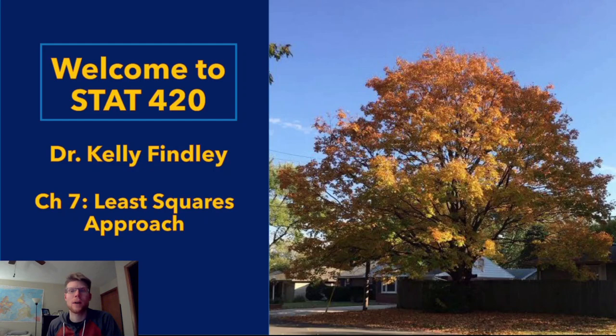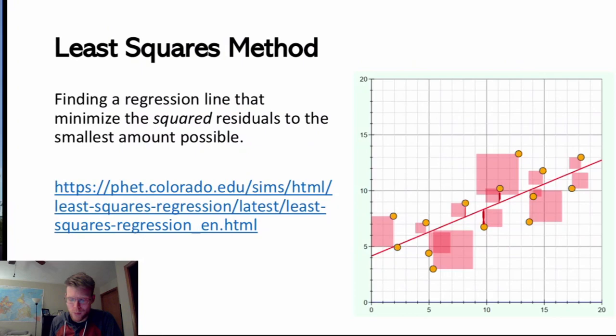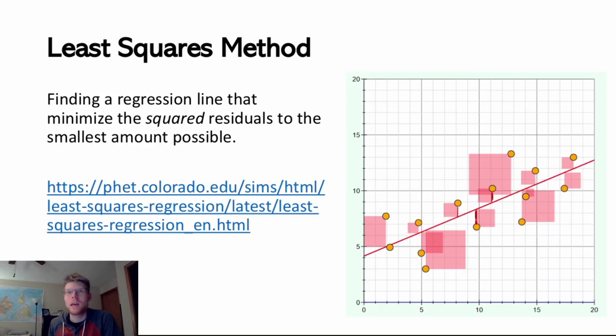Welcome to another video of STAT 420. In this video we're going to talk about the least squares approach to finding a line of best fit. In the previous video we talked about the idea of a linear model being one of our options for defining the relationship between two numeric variables. We didn't talk about how we know which line really is the best fitting line for that relationship.